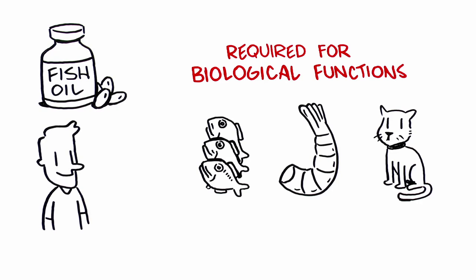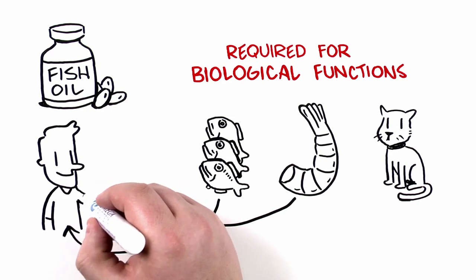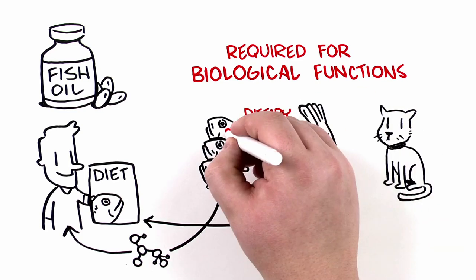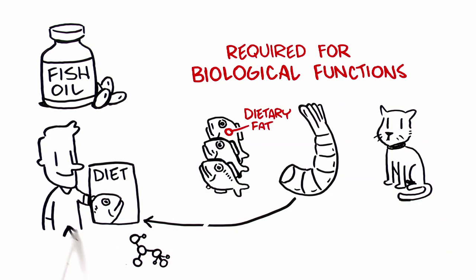The omega-3 content of farmed fish mirrors that of their diet. By depositing dietary fat in their flesh, fish transfer these nutrients up the food chain and deliver long-chain omega-3s to humans.